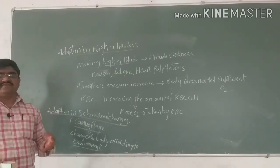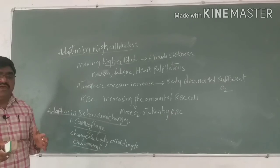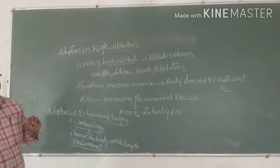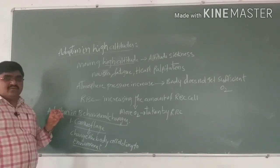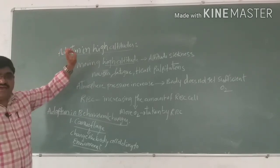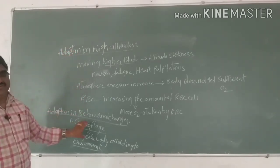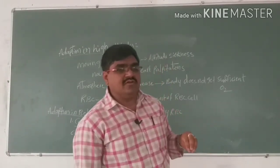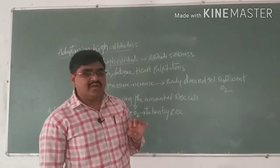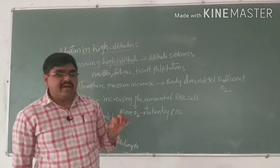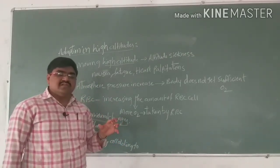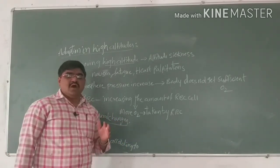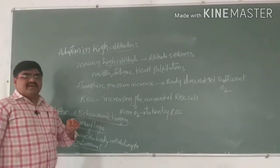So here we discussed adaptations — adjusting to the environment through morphological, physiological, and behavioral changes. We studied plant adaptations, cold-climate animal adaptations, high-altitude adaptations, and behavioral adaptations. In the next class we will discuss population attributes — mortality, natality, immigration, emigration, and exponential growth (J-shaped curve) as well as sigmoid growth curve.